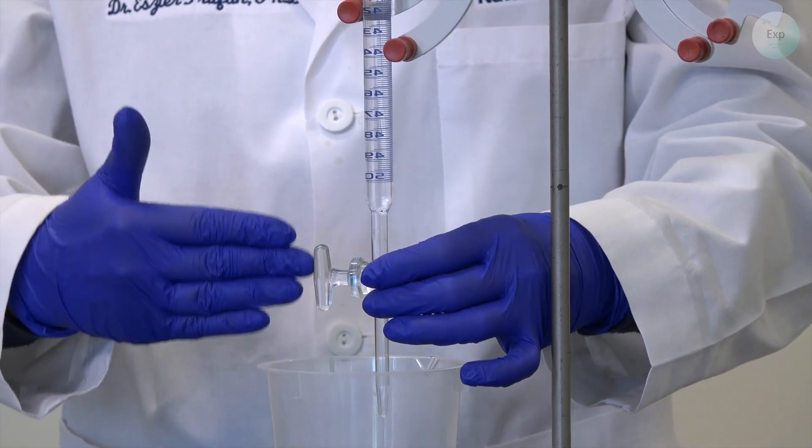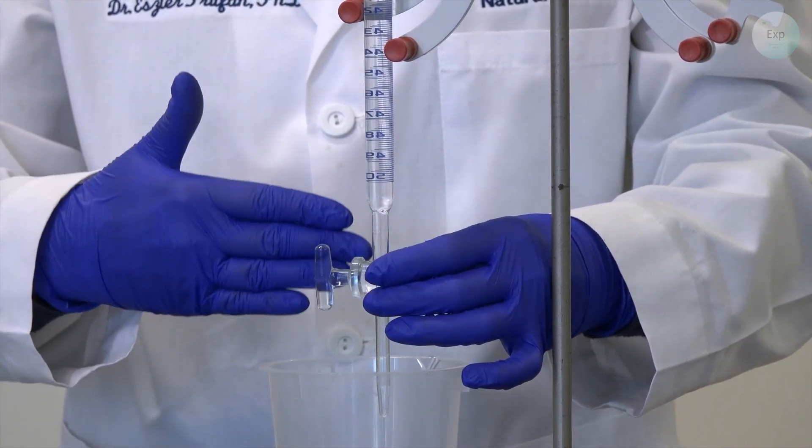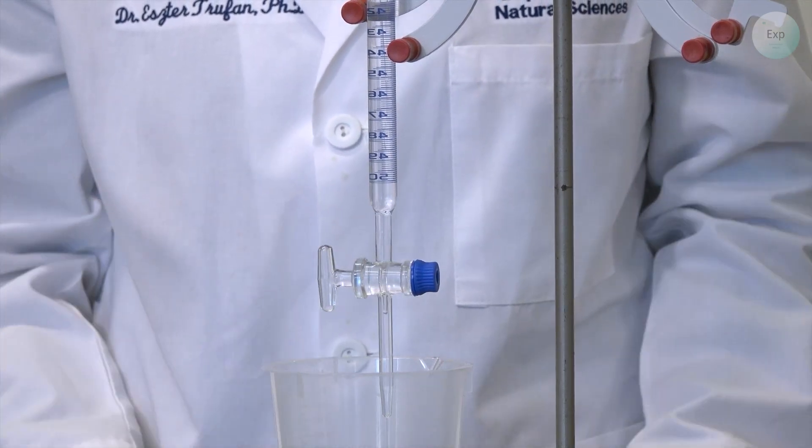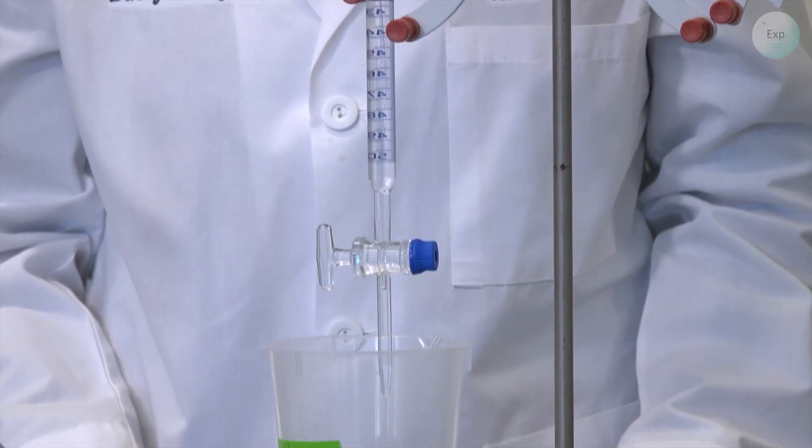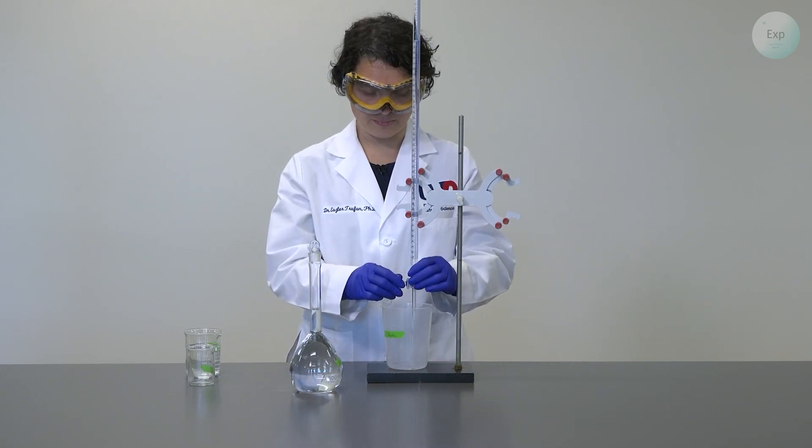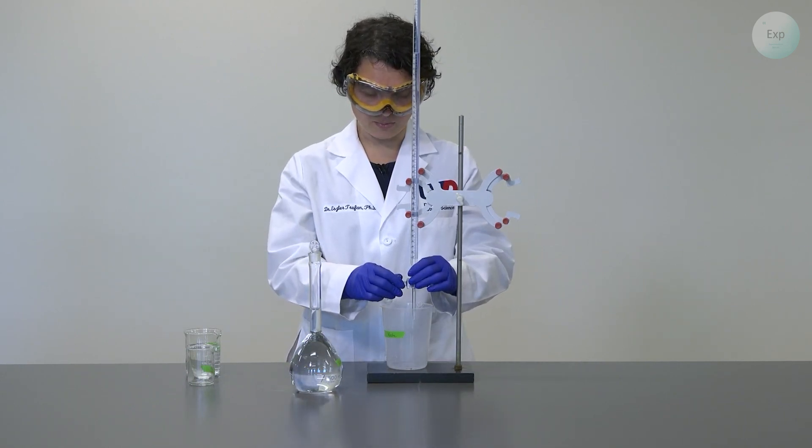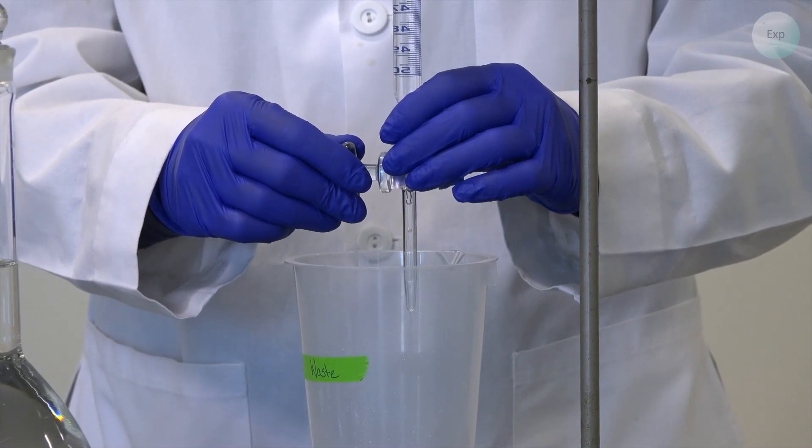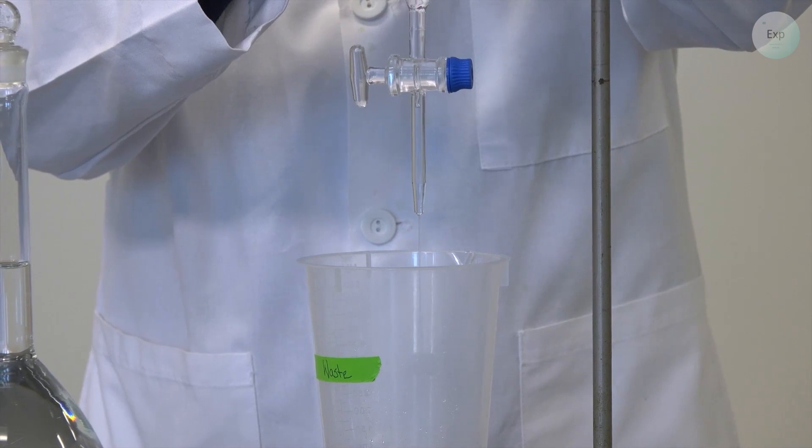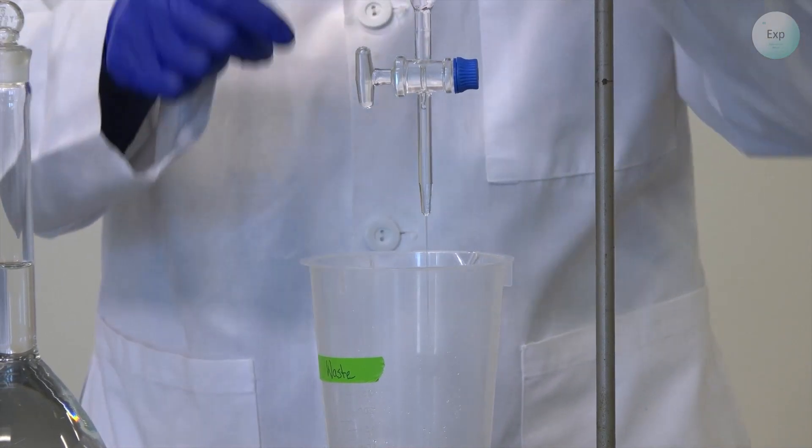At this point, the stopcock will be aligned with the orientation of the burette. And this will allow the water to flow out at its most rapid pace. Now for the different manipulations that are possible, we can slow it down a little bit.